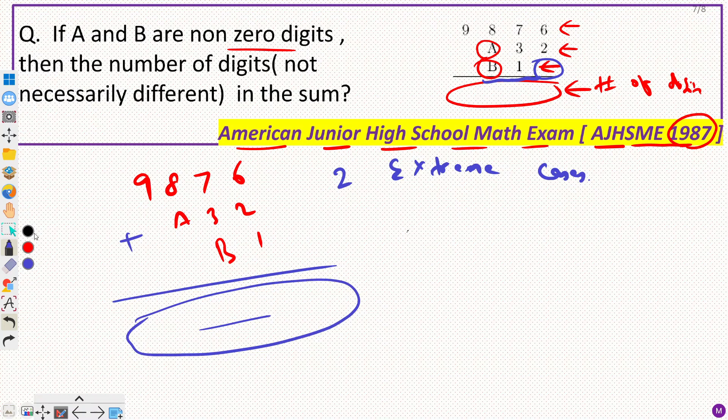So what I am saying is, these two extreme cases would be, let us take the smallest possible digit. So A equal to B equal to 1. This could be the smallest possible. And the largest would be A equal to B equal to 9. Now we have to solve these two cases.